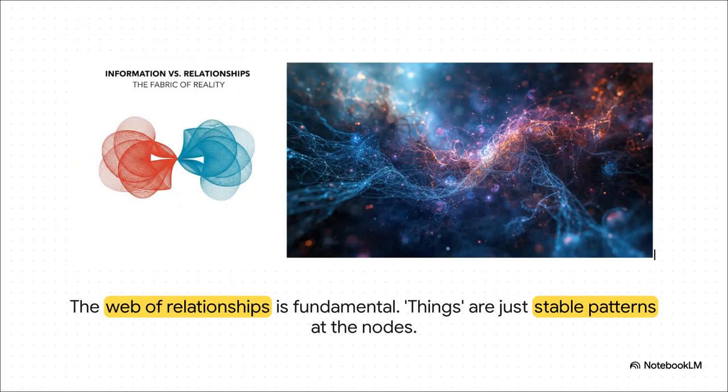Well, the totality framework makes a very clear choice here. It goes all in on the second option, the relational view. So in this model, the universe isn't just a box full of stuff. It's a single, vast, interconnected web. And all the things we see, you, me, a planet, an atom, they aren't really separate objects. They're just stable patterns, like knots or nodes in that gigantic web.